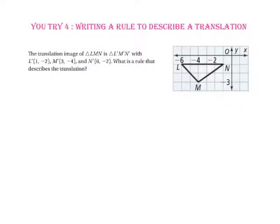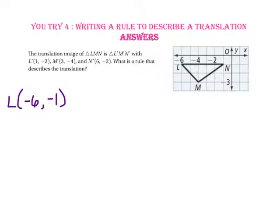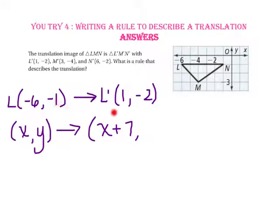Pause the video and do you try number 4. The translation image of triangle LMN is triangle L', M', N', with L' at (1, negative 2), M' at (3, negative 4), and N' at (6, negative 2). What is the rule that describes the translation? Since point L is currently at (negative 6, negative 1) and we are mapping onto L' at (1, negative 2): negative 6 plus 7 equals 1, so there is a move of 7 units to the right. Since negative 1 minus 1 equals negative 2, there is a move of 1 unit down. So the translation rule is: (X, Y) maps onto (X plus 7, Y minus 1).